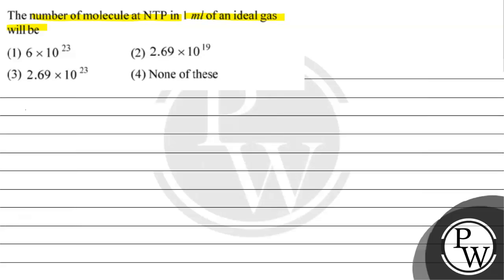Key concept for this question is volume by molar volume equals to number of molecules by Avogadro's number, which is 6.022 into 10 to the power of 23.